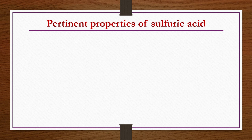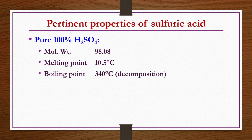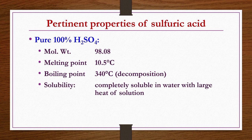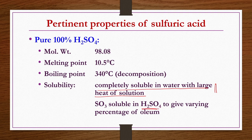Pertinent properties of sulphuric acid: for pure 100% H2SO4, molecular weight is 98.08, melting point 10.5°C, boiling point/decomposition temperature 340°C. It is completely soluble in water but with a large heat of solution — a large amount of heat is evolved when H2SO4 is dissolved in water. Therefore, when making dilute H2SO4, acid is added drop by drop to water, not water to acid. SO3 is also soluble in H2SO4 to give varying percentages of oleum.